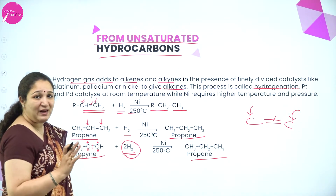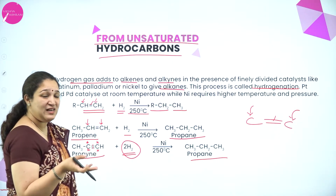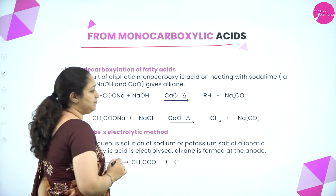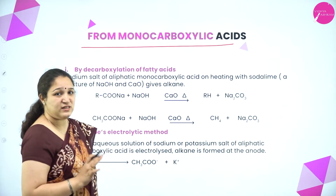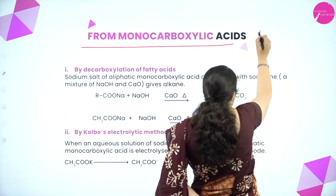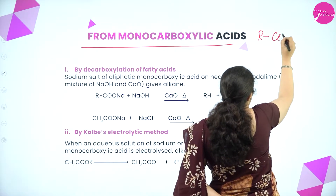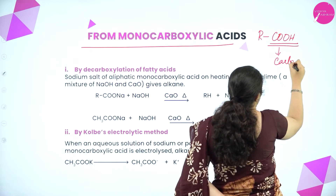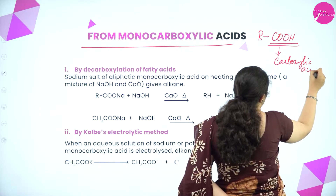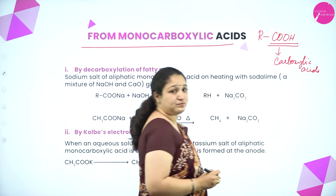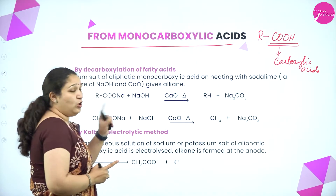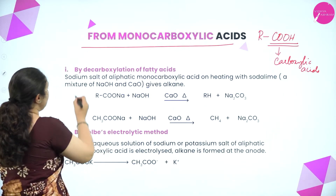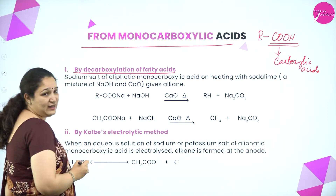So this is how we prepare alkanes from alkenes and alkynes. Next is from monocarboxylic acids. Carboxylic acids contain an R group along with a COOH group. If the COOH group is present, we call it a carboxylic acid. From monocarboxylic acid, which contains only one COOH group, the first method is by decarboxylation of a fatty acid.